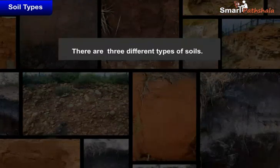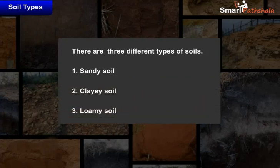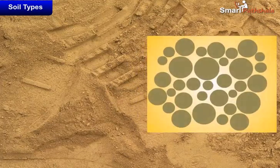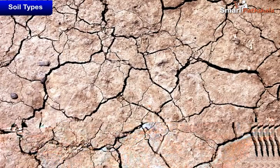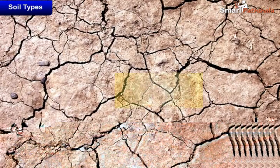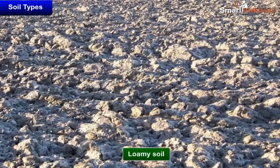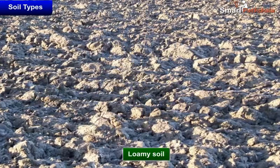There are three different types of soils, namely sandy soil, clayey soil, and loamy soil. Sandy soil contains a greater proportion of big particles. The proportion of fine particles is relatively higher in clayey soil. In loamy soil, the amount of large and fine particles is about the same.